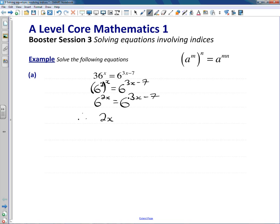So we've got a simple linear equation which we can now solve. So I think I will add 7 to both sides, and at the same time I'm going to subtract 2x from both sides, and that gives me 7 equals x. I suppose it's better to write x equals 7.